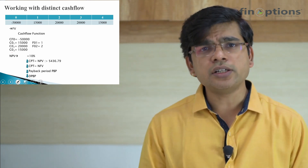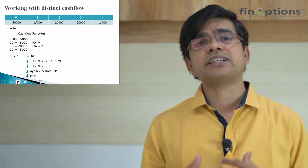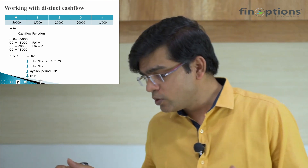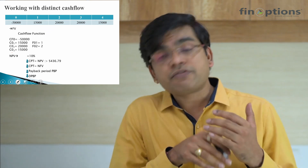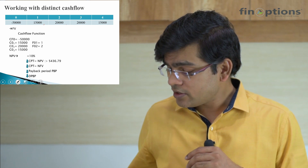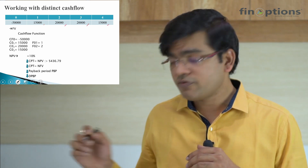We've done a question on PMT — determination of EMI from a loan. Now let's take another example working with distinct cash flows, where the cash flows are not the same and they change over a period of time. Somebody is investing into a project with an initial outlay of $50,000. This project is expected to generate cash flows for the coming four years, but the cash flows are different. The outflow today is $50,000, and in the next year you get $15,000, then $20,000, $20,000, and $15,000.